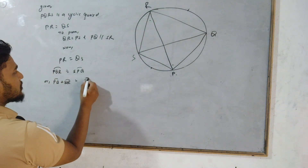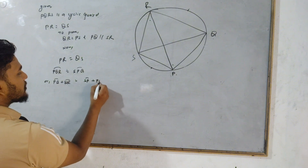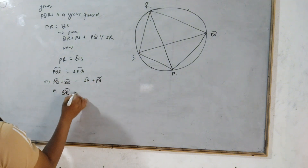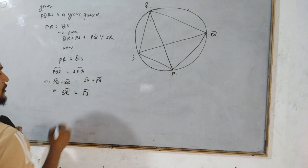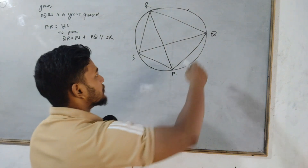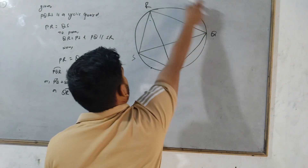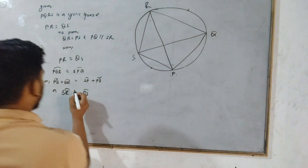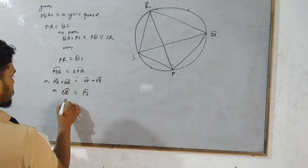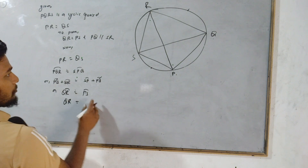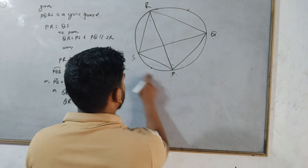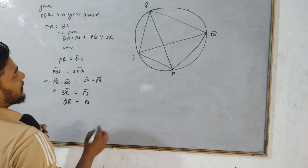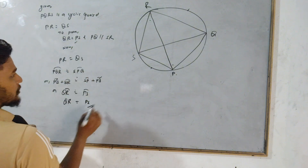In the same way, arc SP plus arc PQ equals arc PR. PQ cancels and QR is equal to SP. We have to take care of this — this QR arc is equal to the opposite arc length. We have to take QR. QR arc length is equal to PS. The first part is QR equals PS.